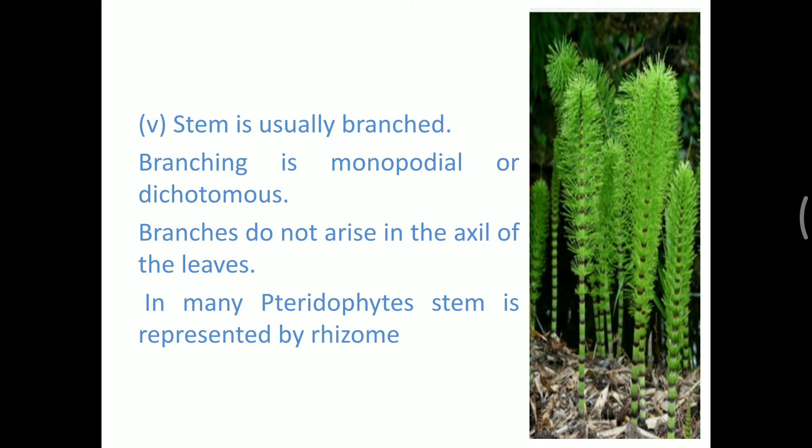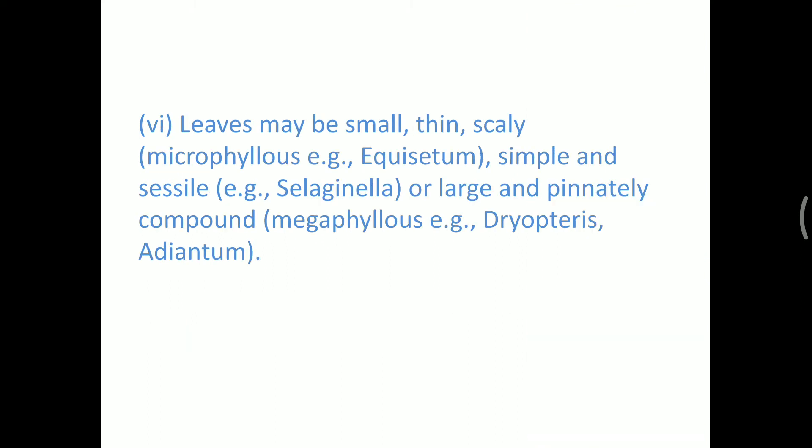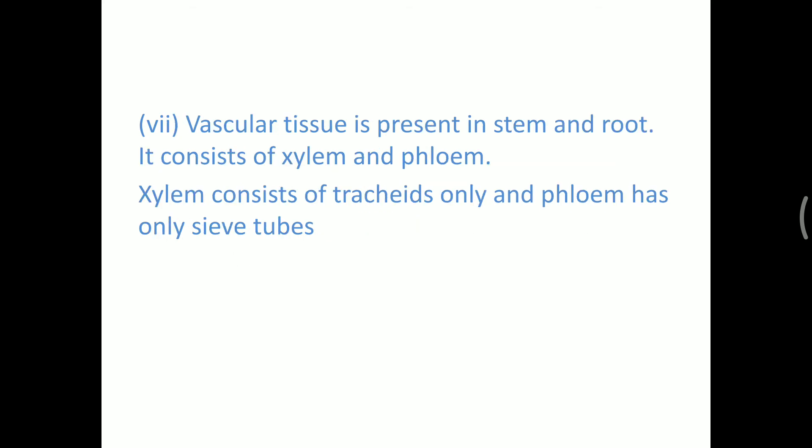In pteridophytes, stems have the presence of rhizome. Leaves may be small, thin, and scaly — for example in Equisetum, which has microphyllous leaves. If asked to name a plant with microphyllous leaves, remember it is Equisetum. Some leaves are simple and sessile as in Selaginella, which looks like a creeper. Dryopteris and Adiantum have megaphyllous leaves — these are typical ferns, also called trap-terrace.